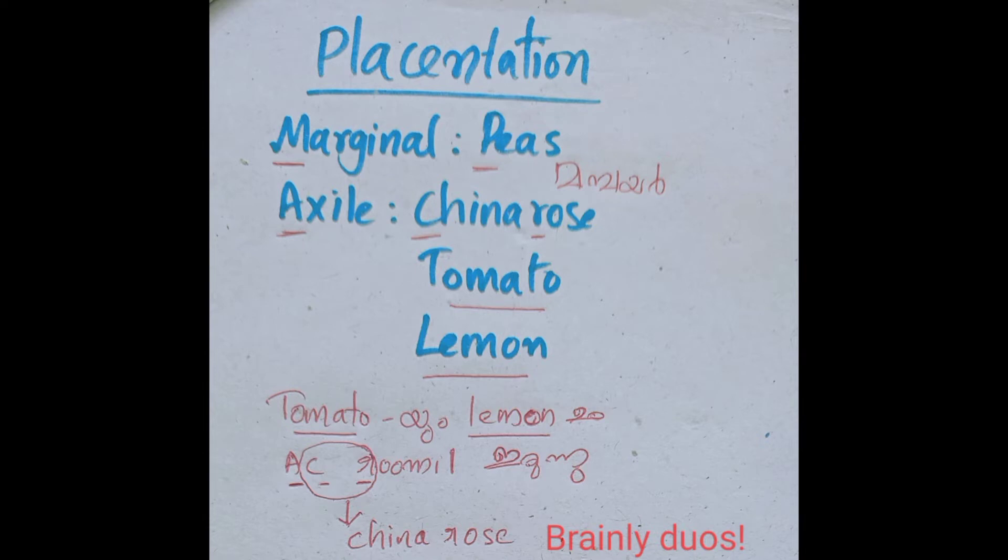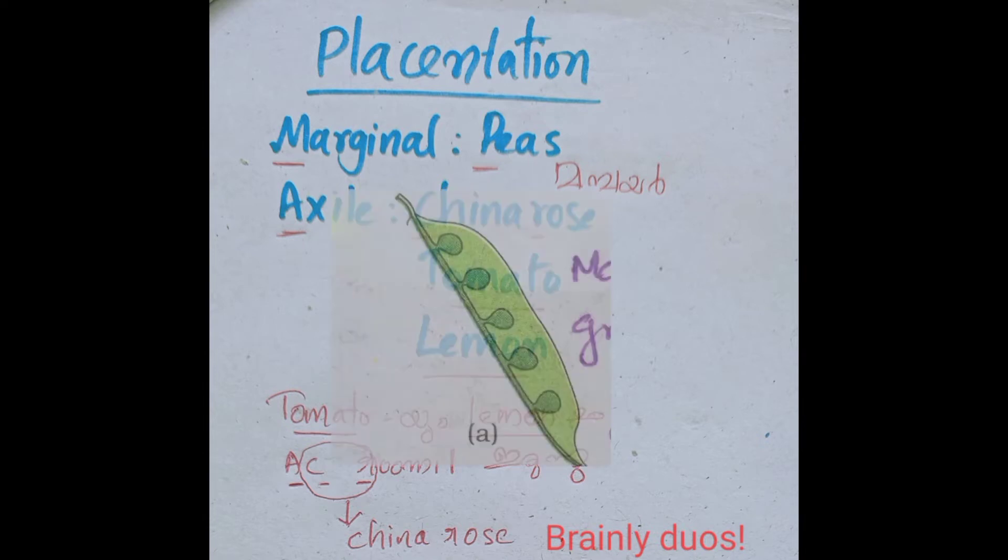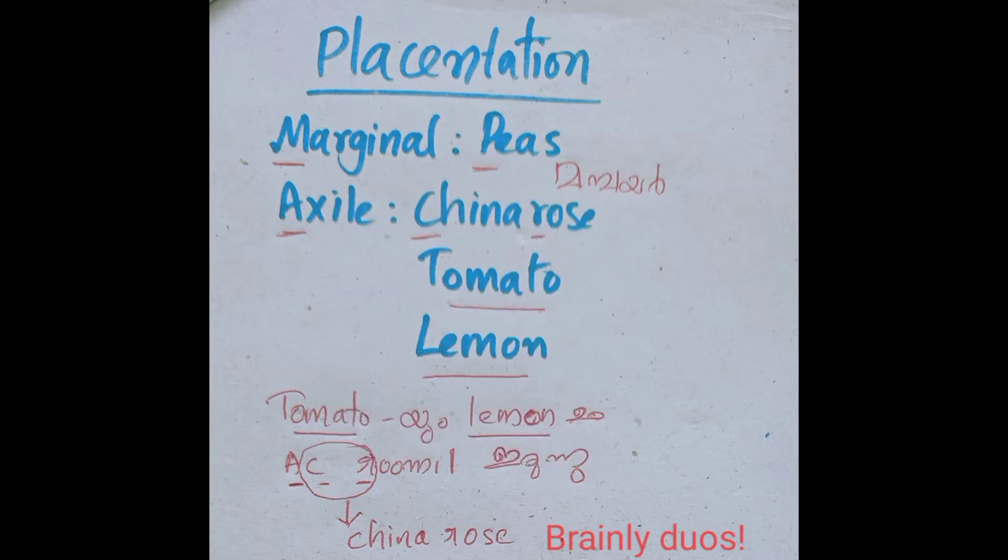Marginal placentation. Marginal placentation is pea. Then, one of the main things. Marginal body is pea. Then, one of the main things.